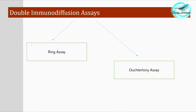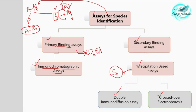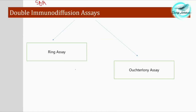Another way of determining species identification is through secondary binding assays — specifically single immunodiffusion, double immunodiffusion, and immunoelectrophoretic assays. Single immunodiffusion is also called radial immunodiffusion, to be studied in detail in the next video. Double immunodiffusion involves the ring assay and the Ouchterlony double diffusion method, which is very important and widely carried out in laboratories for species identification.